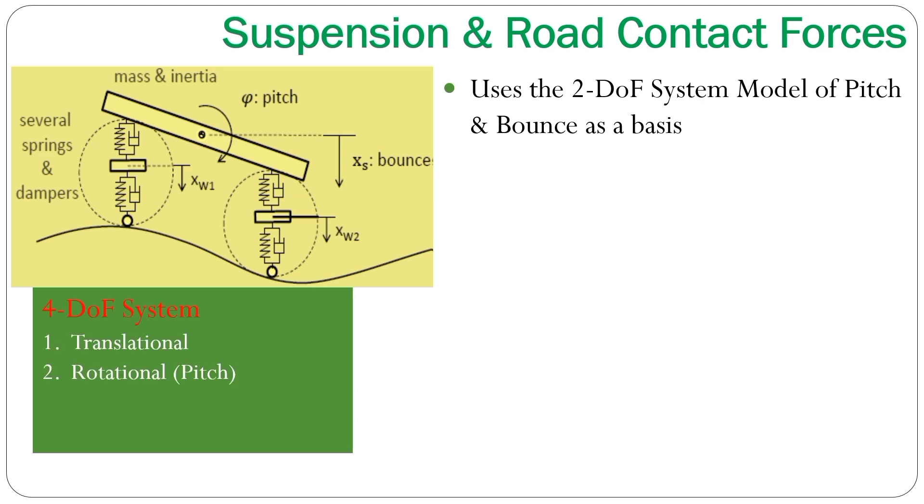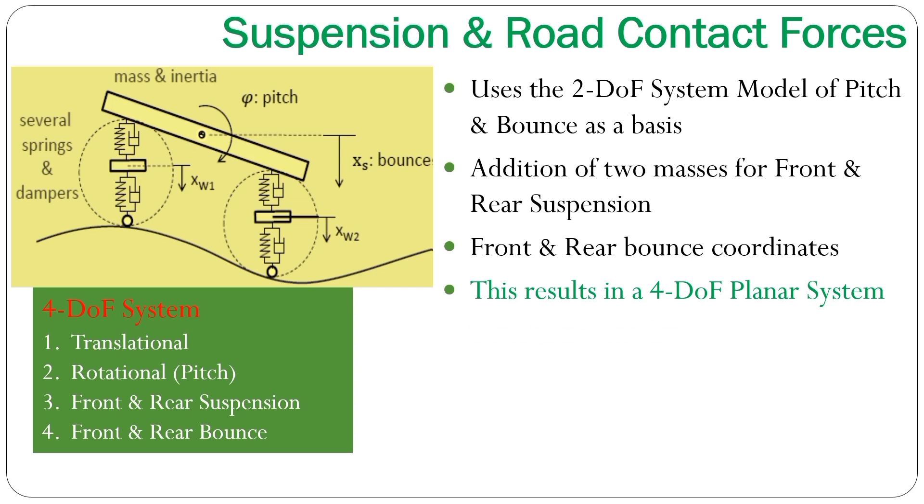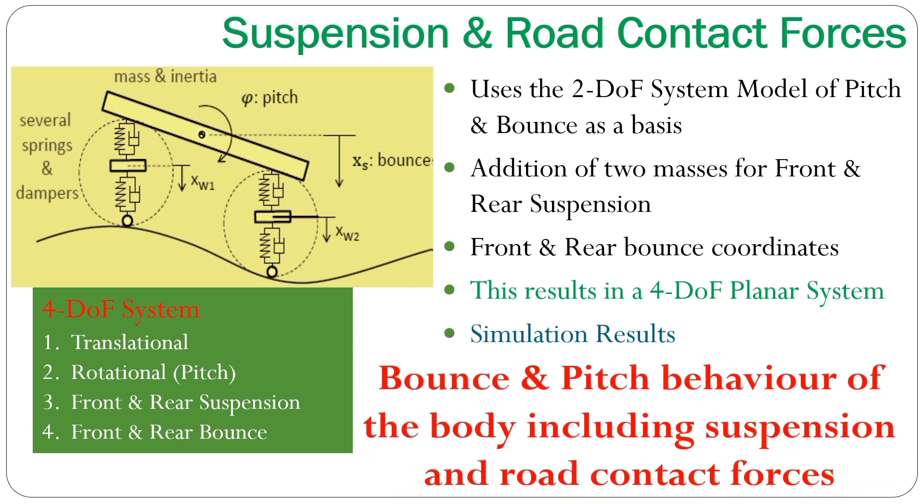We can see that we have the pitch and bounce model from the previous example as the basis. Now, we have added two masses for the front and rear suspension systems. With additional front and rear wheel bounce coordinates, we have altogether four coordinates which means that now we have a four degree of freedom planar system that allows us to get more simulation results. Additional to the bounce and pitch behavior of the car, we can also simulate additional suspension forces and wheel contact forces.